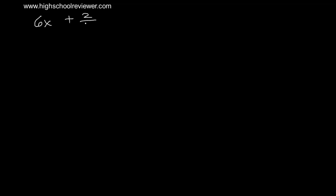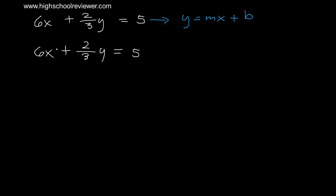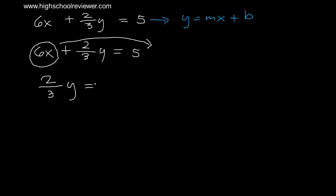Here's another problem: positive 6x plus 2 over 3 y equals 5. We need to convert this to the form y equals mx plus b. We need to transpose positive 6x to the other side. What will be left on the left side is 2 over 3 y. Transposing positive 6x changes its sign to negative 6x, and positive 5 remains positive 5 on the right side.